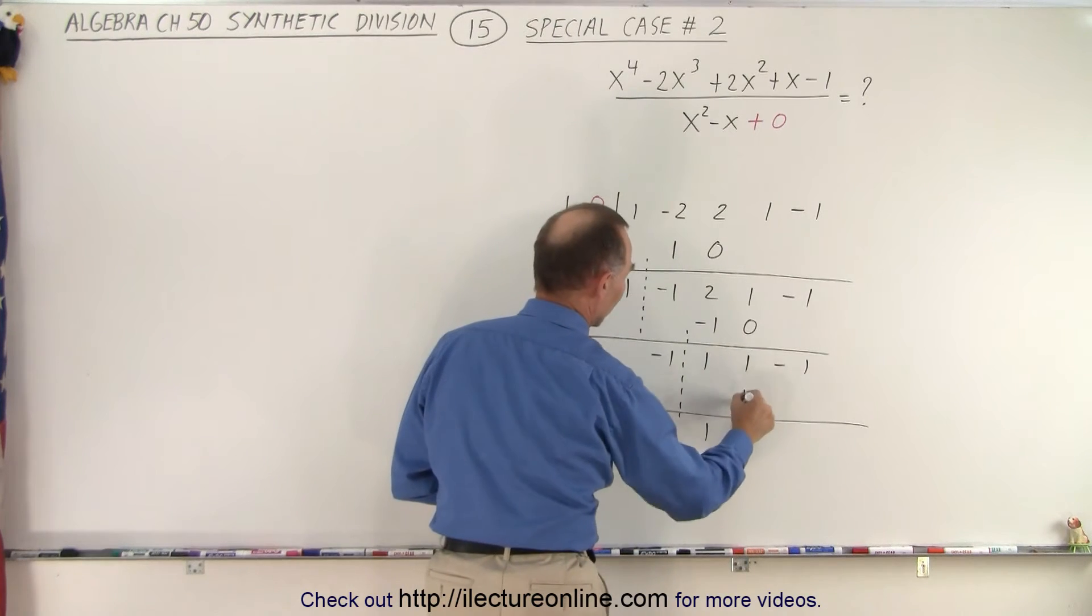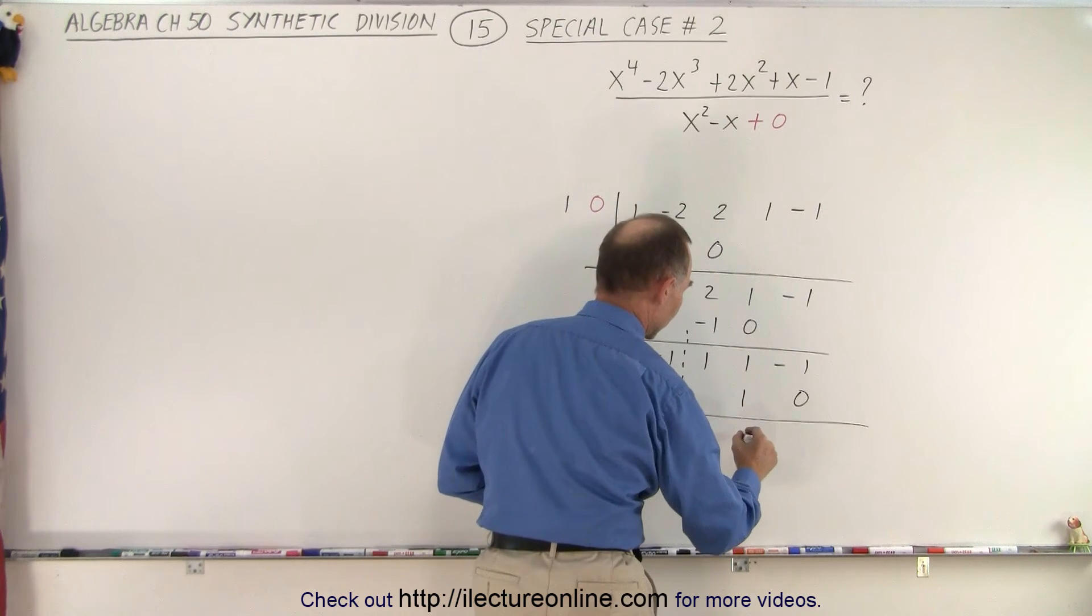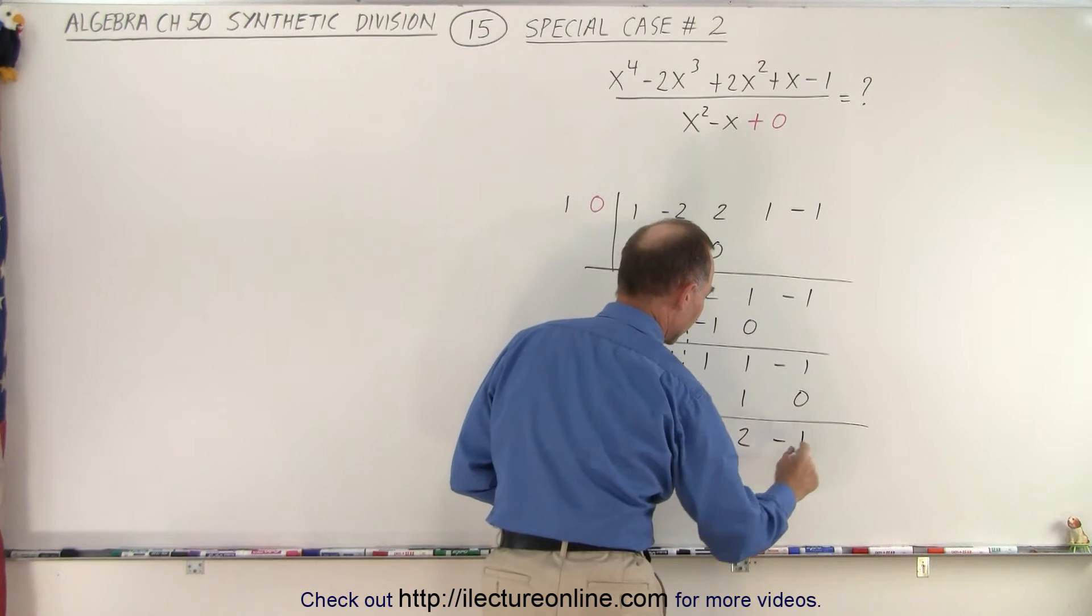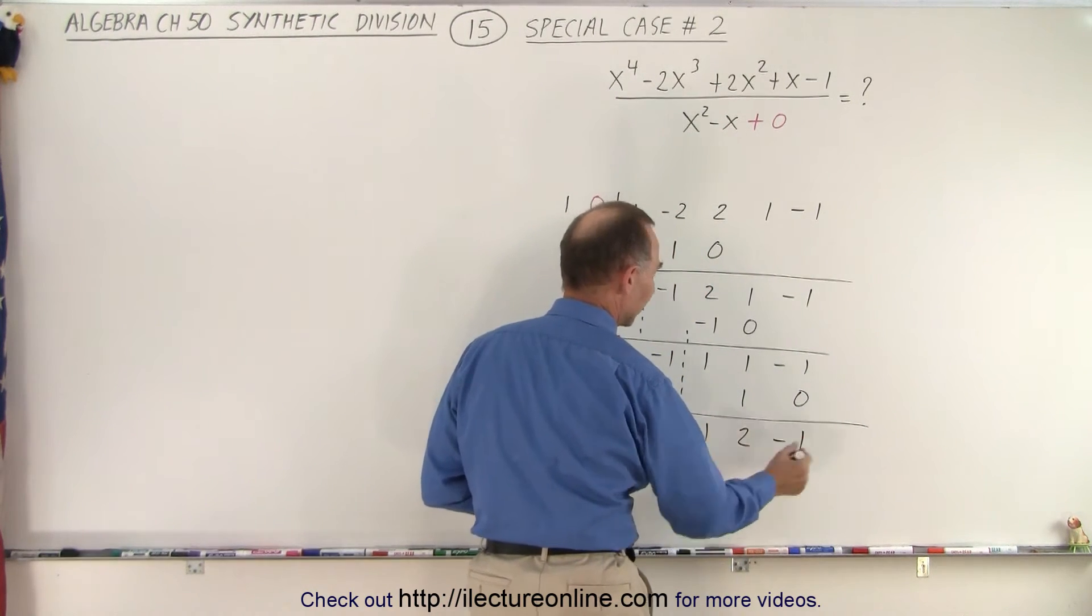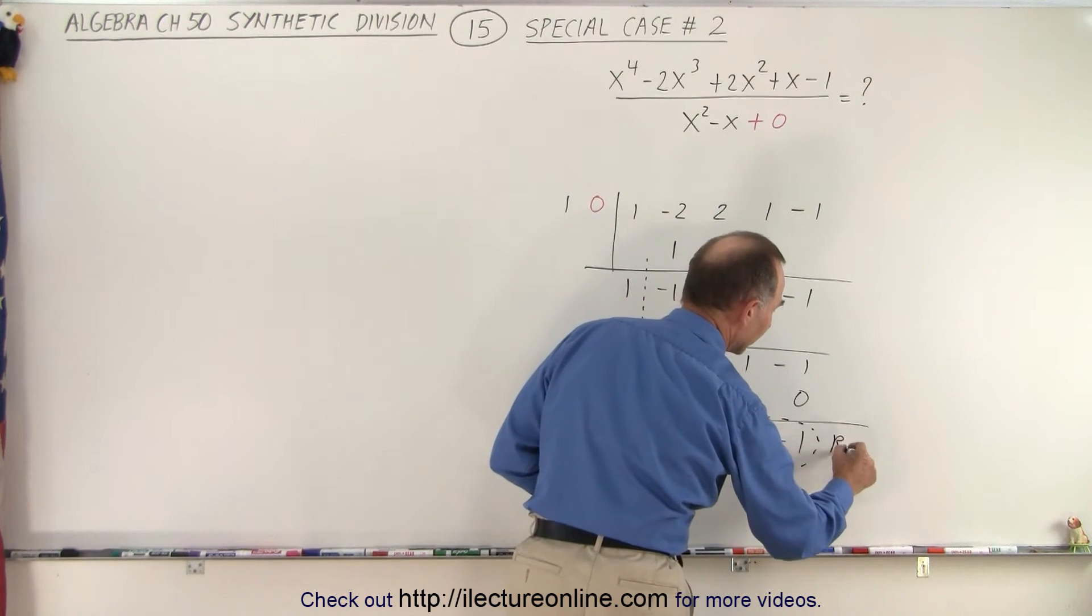1 times 1 is 1, 0 times 1 is 0, add the two together, you get 2, you get negative 1, and we're done because now all the numbers are taken care of and here notice that we have a remainder.